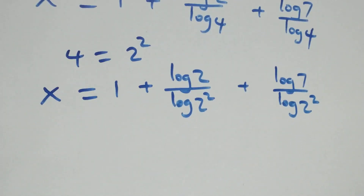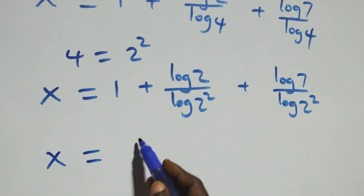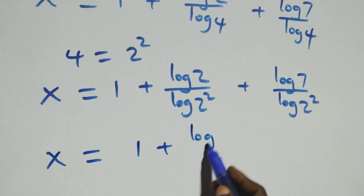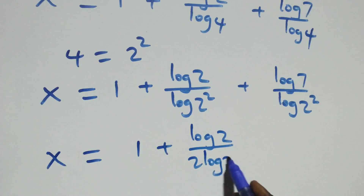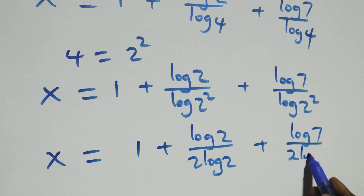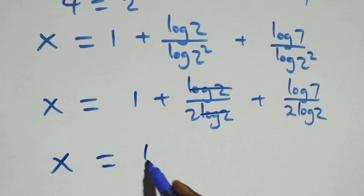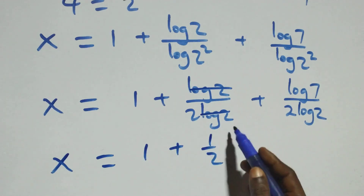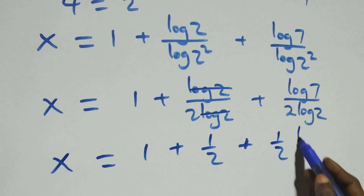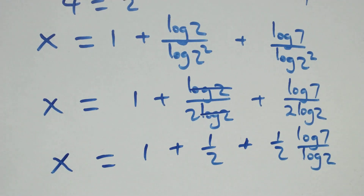Then we apply the power rule of logarithms: the exponent 2 comes down in front. So we have x equals 1 plus log 2 over 2 log 2, plus log 7 over 2 log 2. From here, log 2 cancels with each other and we have x equals 1 plus 1 over 2, plus 1 over 2 times log 7 over log 2.